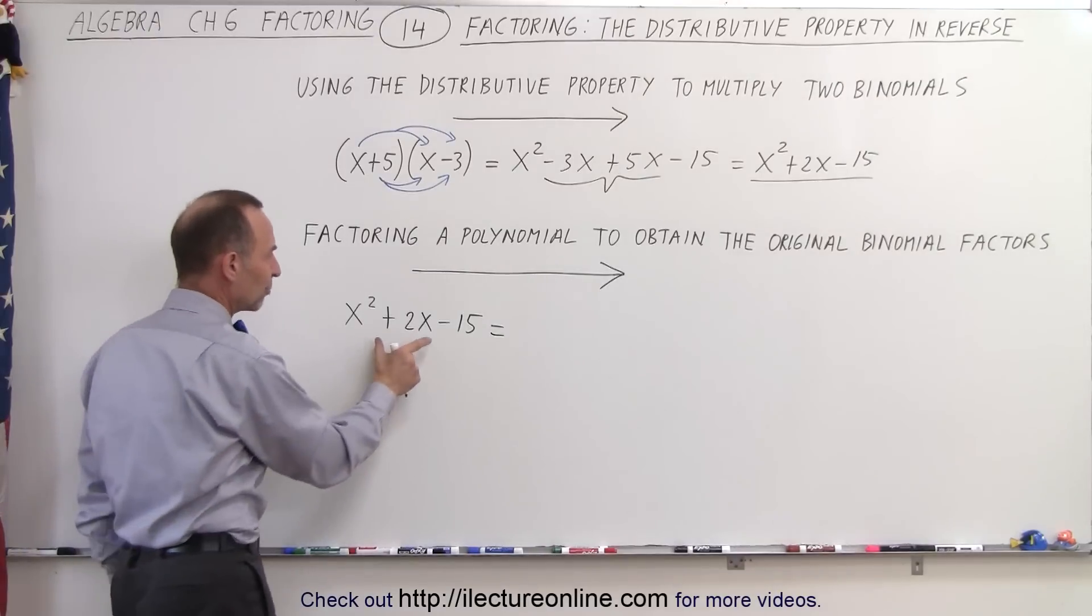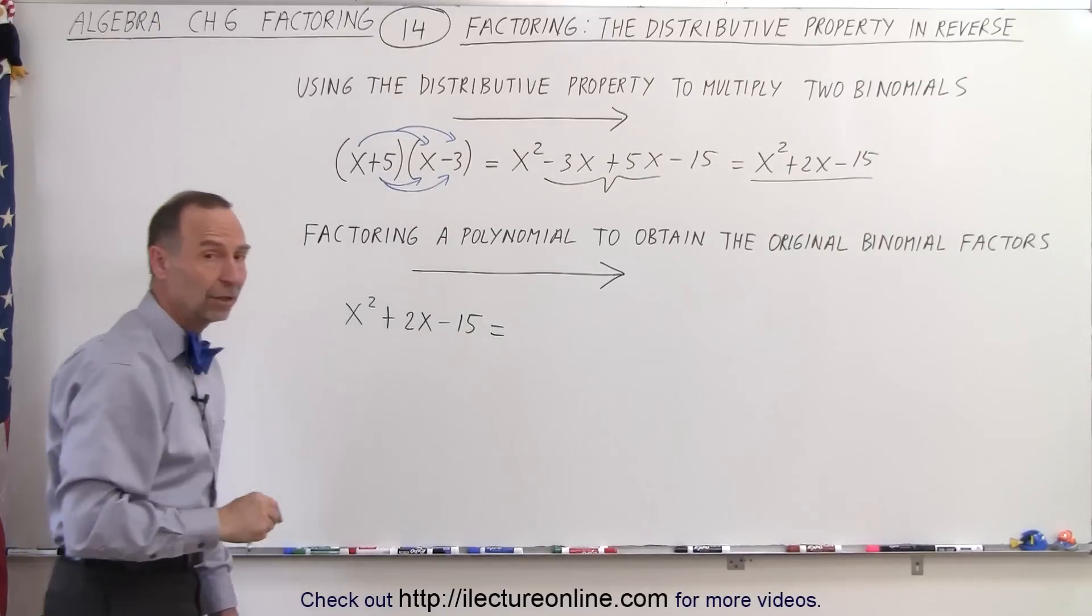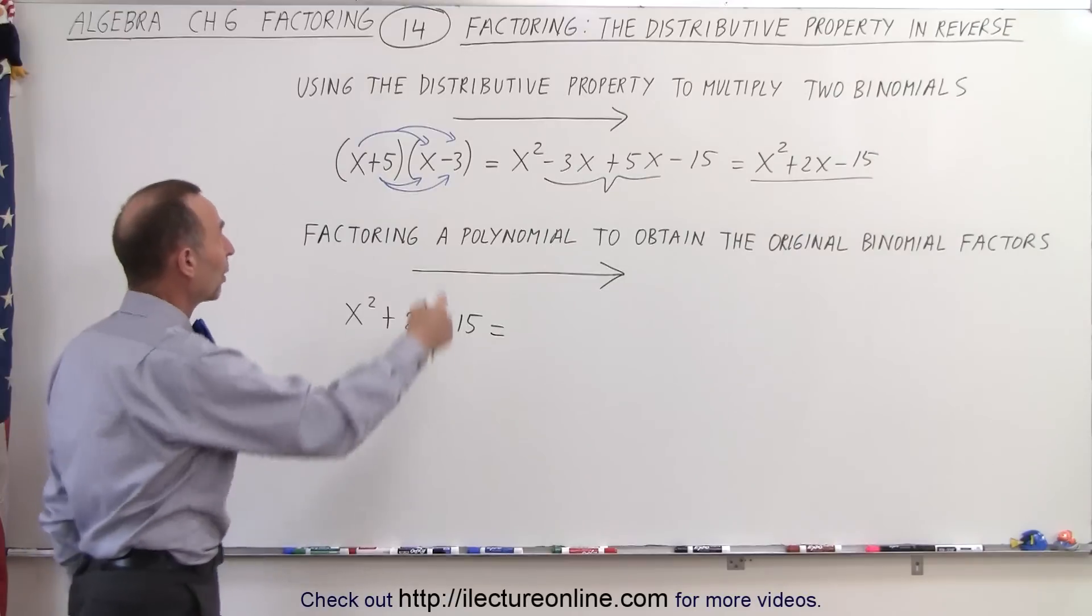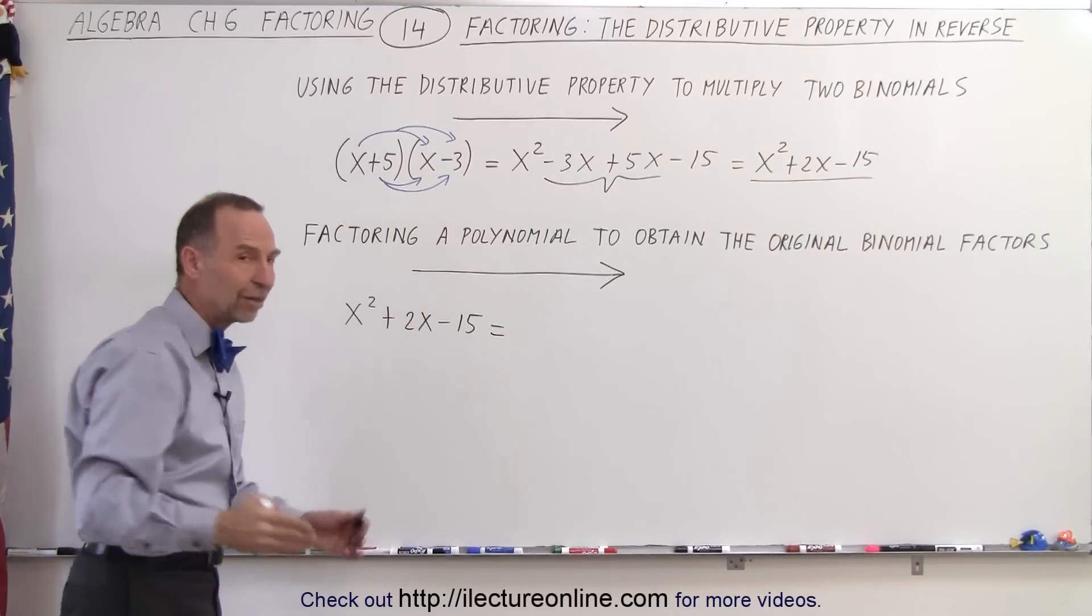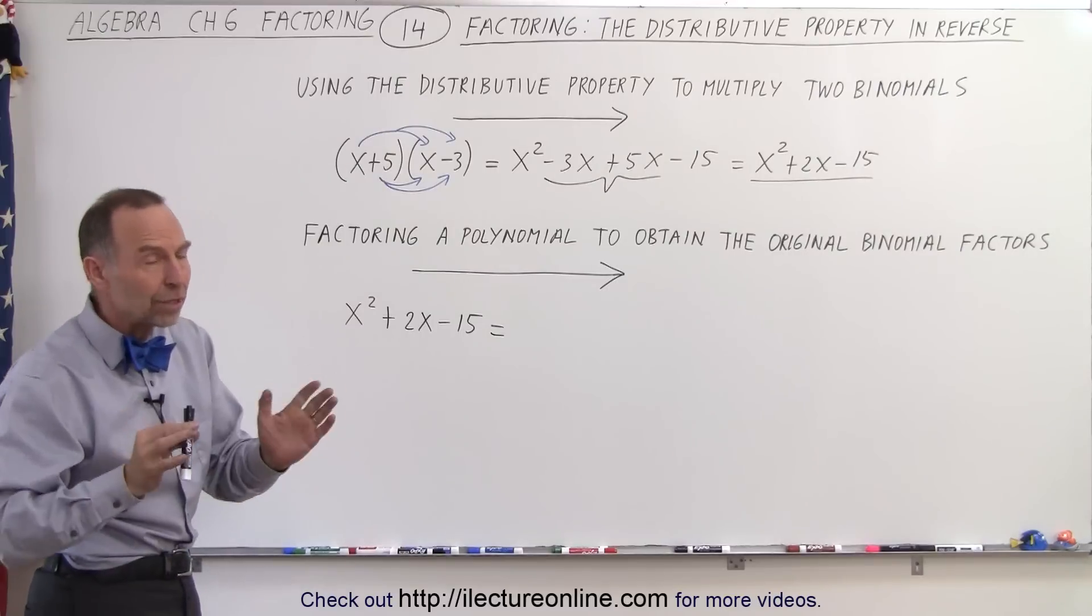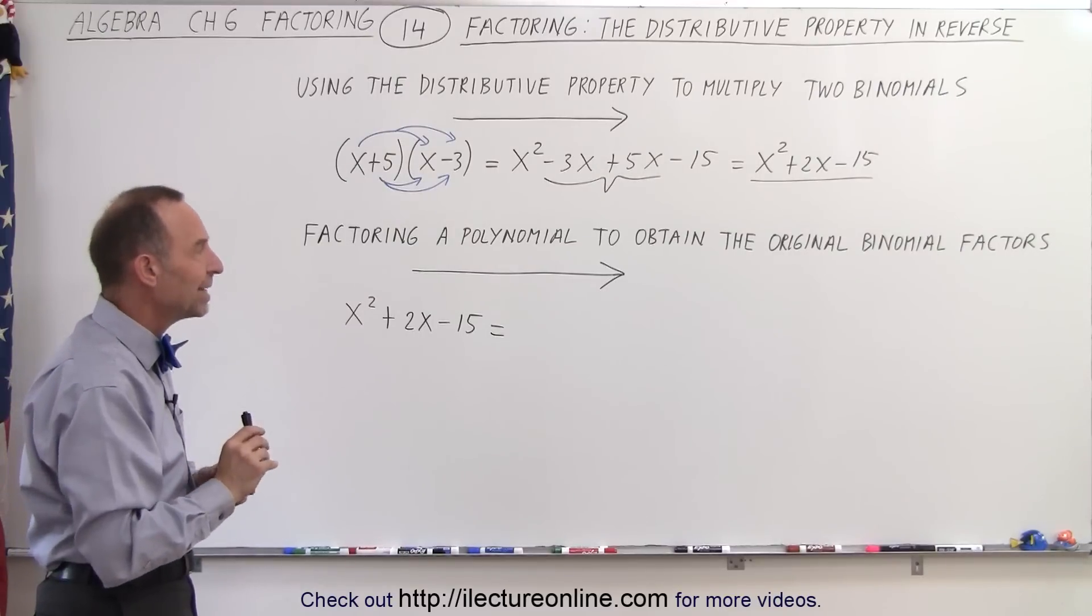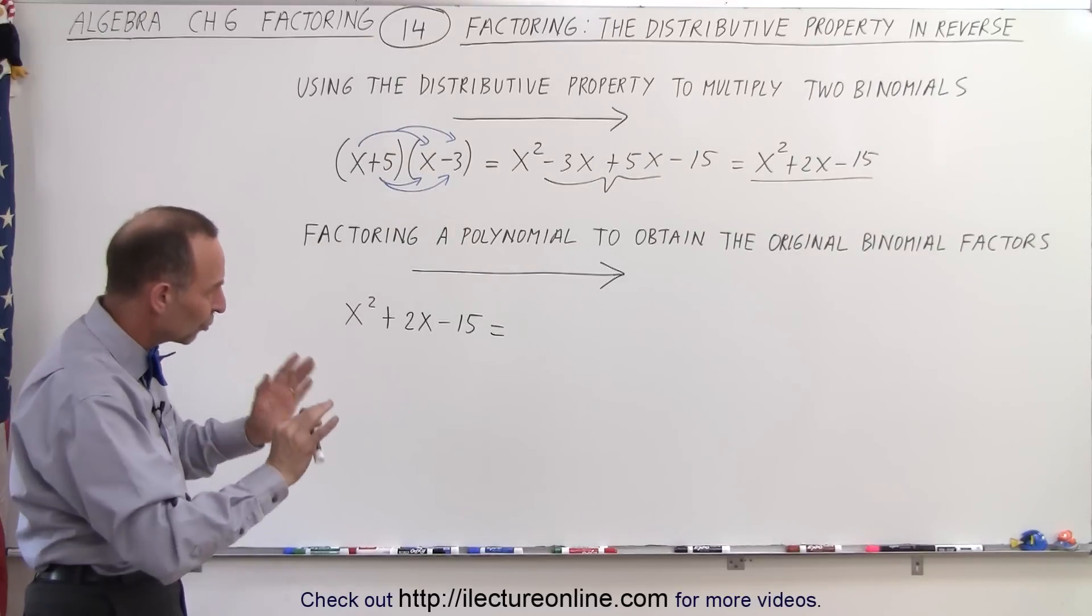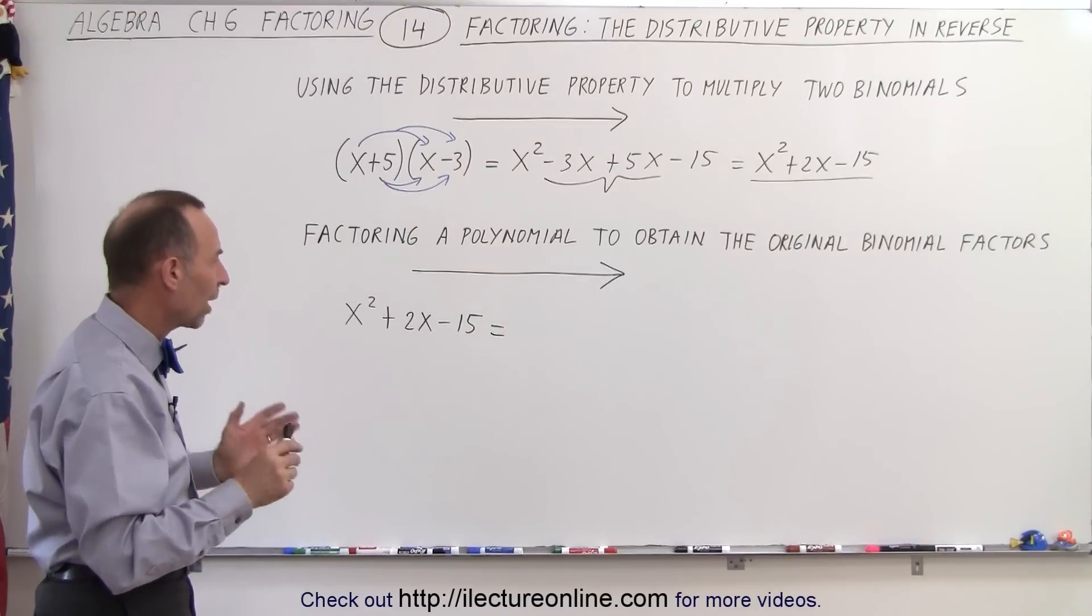Now notice that's the very same trinomial that I have over here. Now what we're trying to do is get back to where we started with. We want to write this trinomial as the product of two factors. Now exactly how we do that—well, there's a number of techniques, but at least at this point we're going to use more or less trial and error.